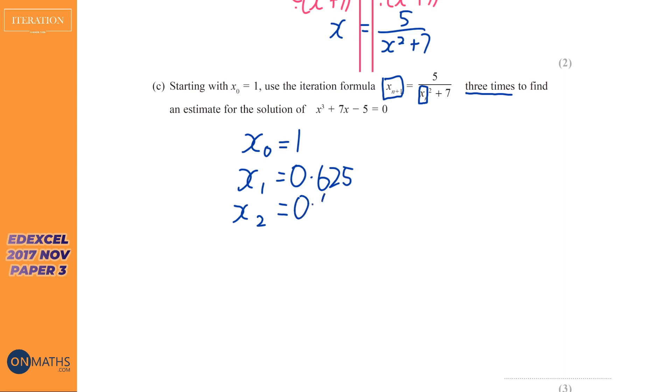And it says it wants it three times, so chances are that we're going to have to show each step. I'm going to press equals again, and I get 0.676532, blah, blah, blah. Press equals again, and we get 0.6704483, blah, blah, blah.